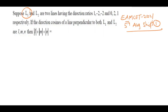Next problem: Lines L1 and L2 have direction ratios (1, −2, −2) and (0, 2, 1) respectively. If the direction cosines of a line perpendicular to both L1 and L2 are l, m, n, find |l| + |m| + |n|. To find the direction cosines of the perpendicular line, we take the cross product of the two direction ratio vectors.